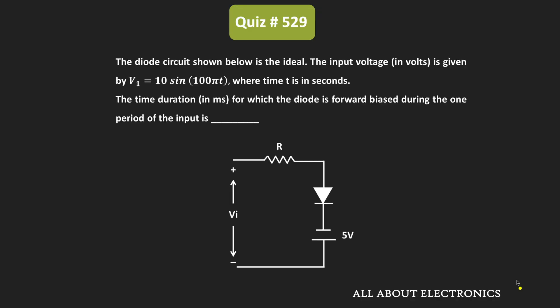Hey friends, welcome to the YouTube channel All About Electronics. So in this question, we have been given this diode circuit and here we have been given that the diode in the given circuit is the ideal diode.